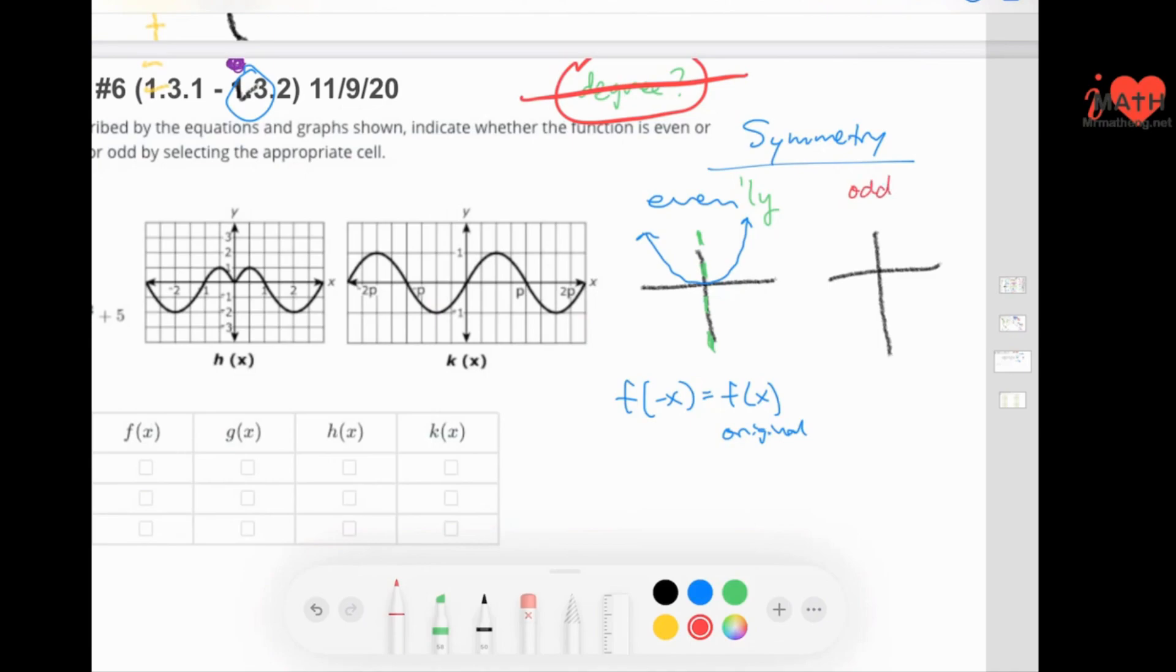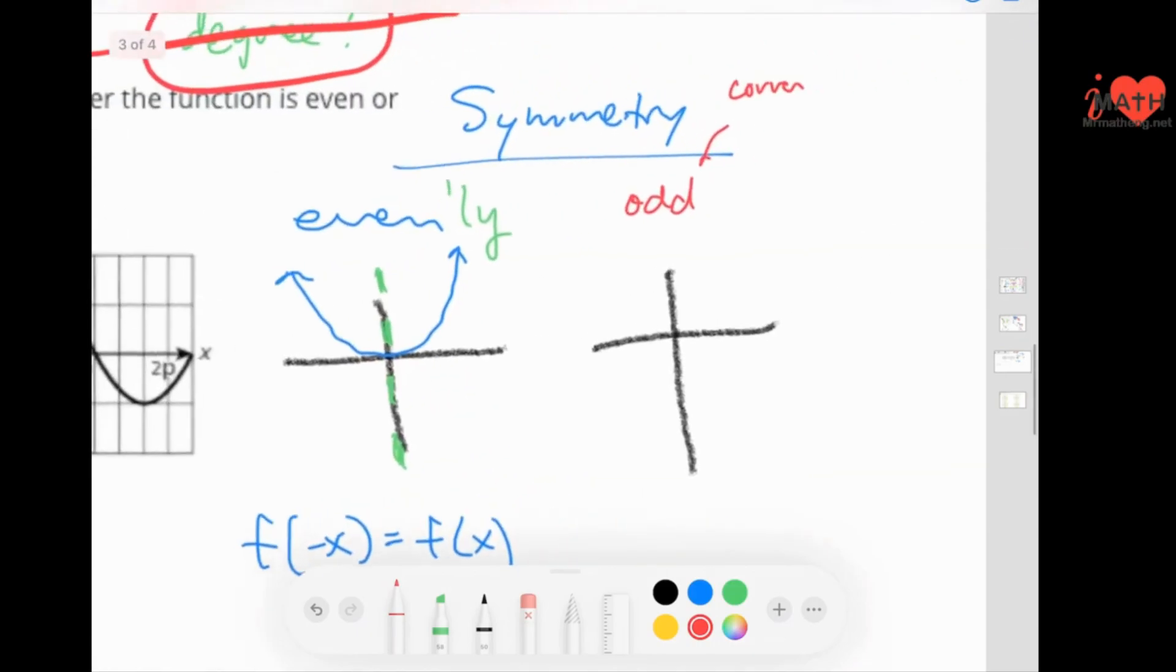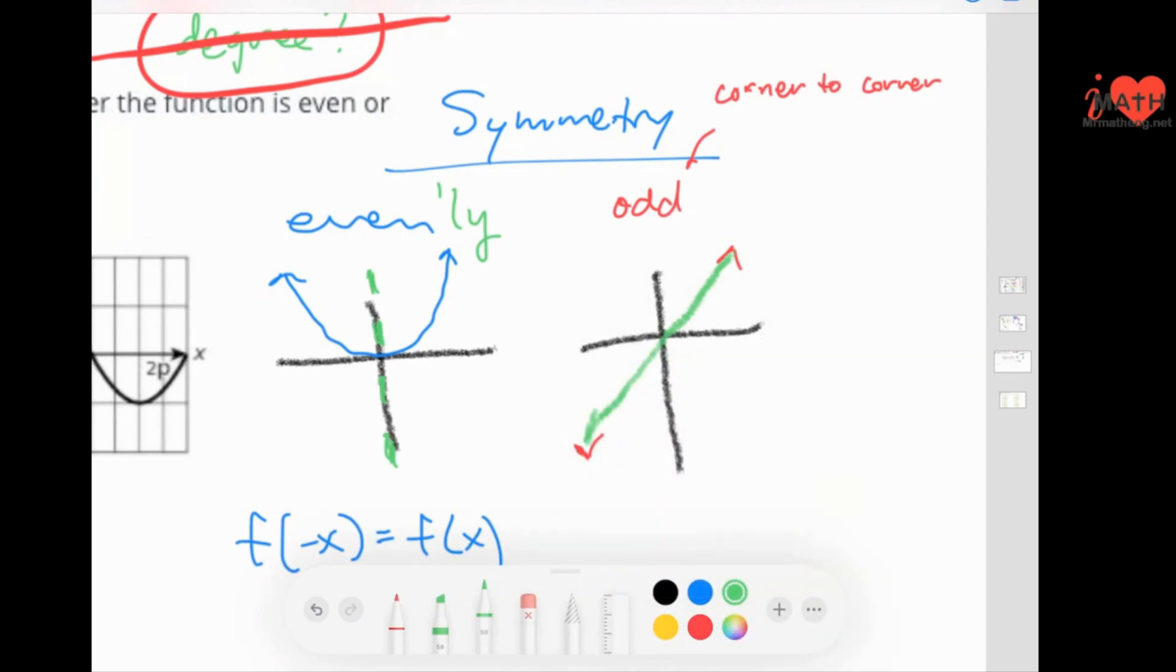Now the other one is odd. Symmetry wise, this is, you can call this corner to corner. Kind of like an origami. The easiest one you know is x to the first.